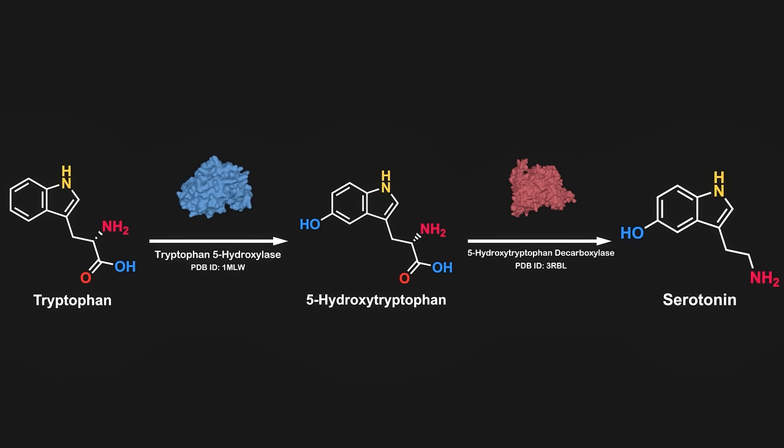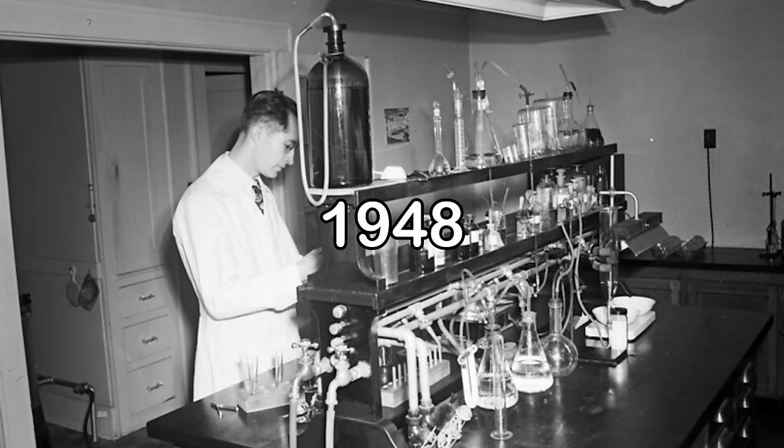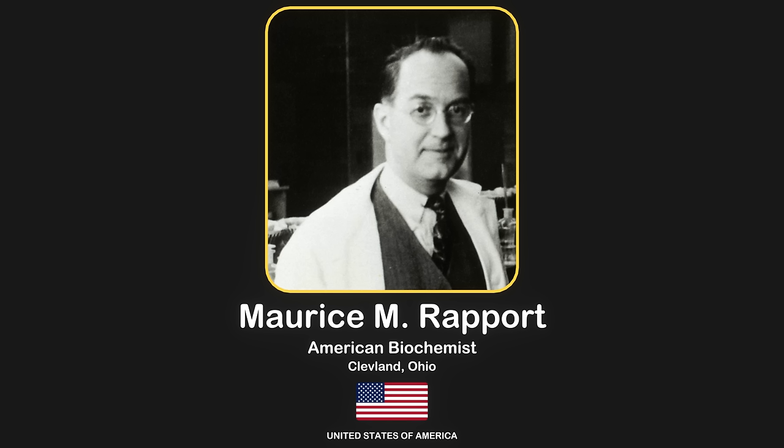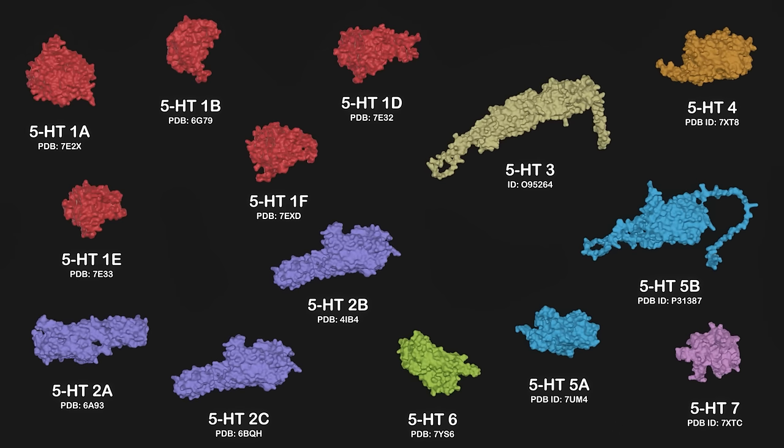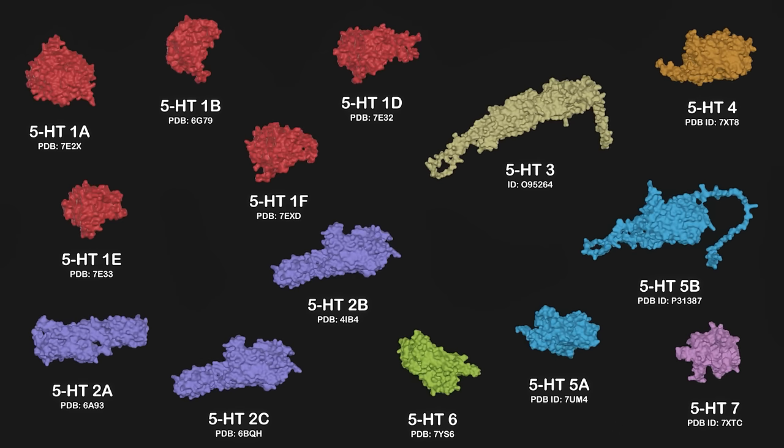The discovery of serotonin dates back to 1948. Its discovery is credited to Maurice Rapport, a biochemist from Cleveland, Ohio. Serotonin functions by binding to serotonin receptors situated on neuronal surfaces. These receptors are divided into multiple categories, from 5-HT1 through 5-HT7. Different receptor classes serve distinct functions.